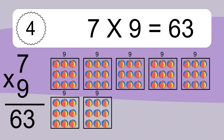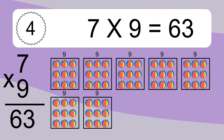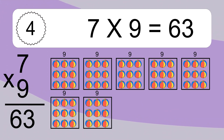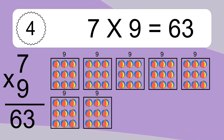7 times 9 equals what? We have 7 boxes, and each box has 9 colorful balls inside. If you count all the balls in all the boxes together, you will have 7 times 9 balls. This equals 63 balls.